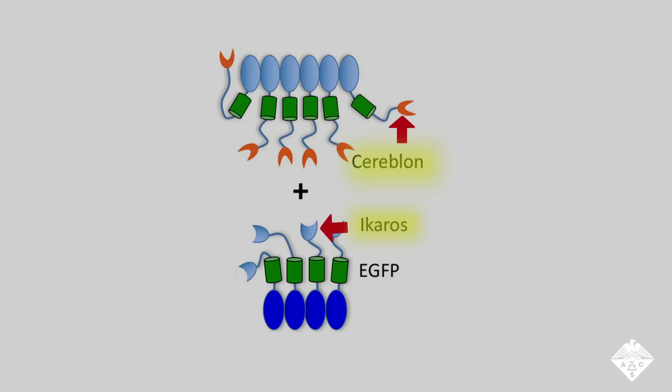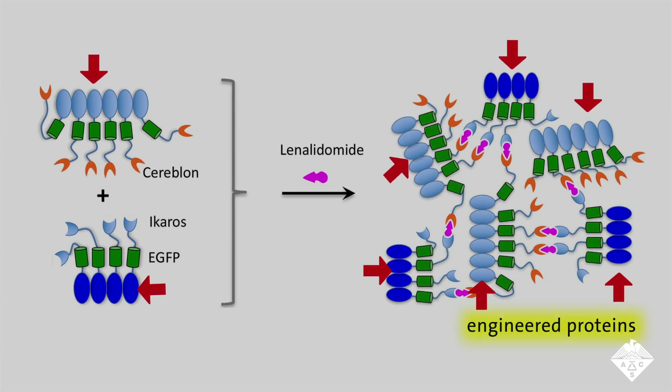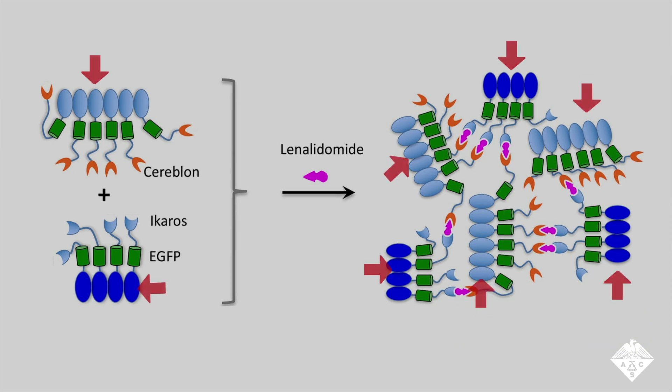To develop their assay, the researchers made use of the known interactions among lenalidomide, Cereblon, and Ikaros. They genetically engineered human cells to produce Cereblon and Ikaros, each with an attached green fluorescent protein called EGFP. The engineered proteins also had additional binding sites that allowed more of the proteins to interact than normally would.